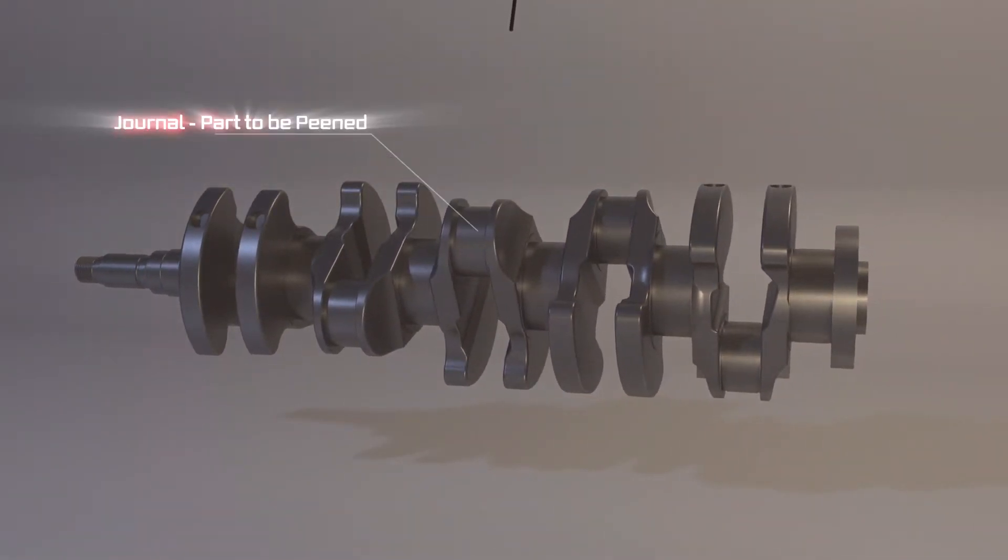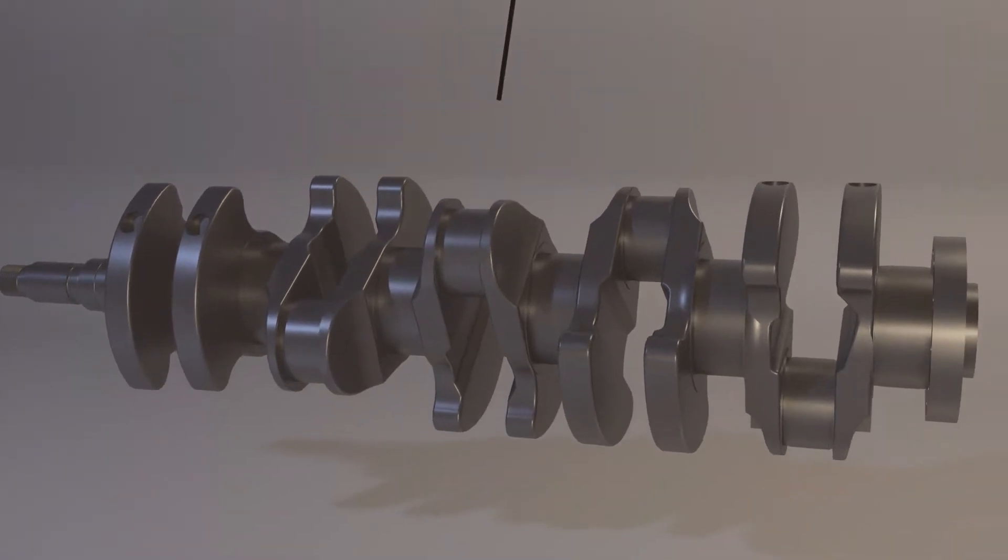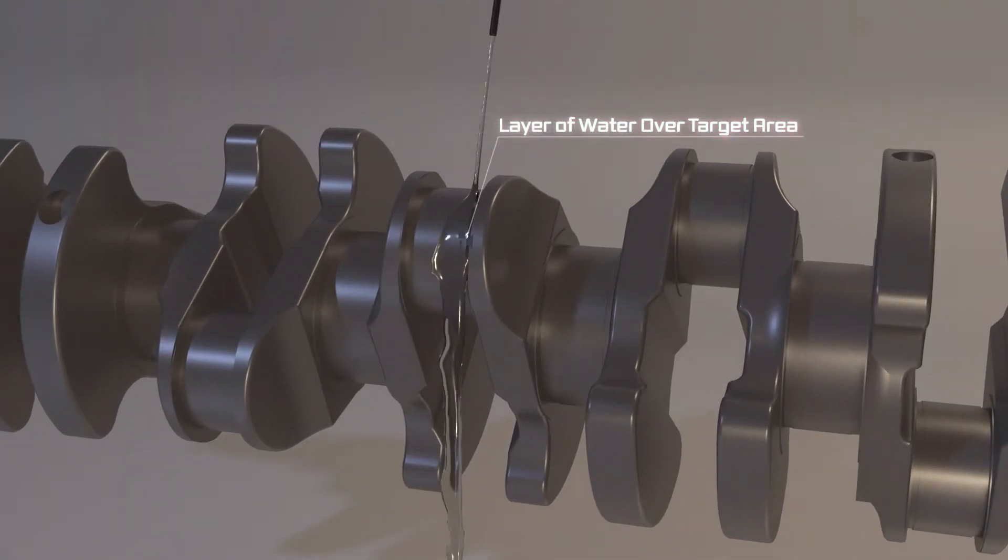It will rotate on the axis of the journal to receive laser peening treatment. The laser will strike at the stress points we identified. A thin water layer flows to cover the target area.